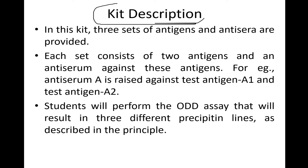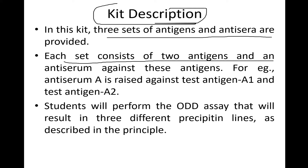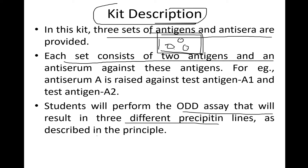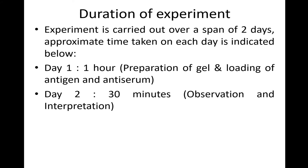Regarding the kit description, three sets of antigen and antiserum are provided. Each set consists of two antigens and one antiserum. Students will perform the assay and observe three different precipitate line patterns, corresponding to the three patterns just described.